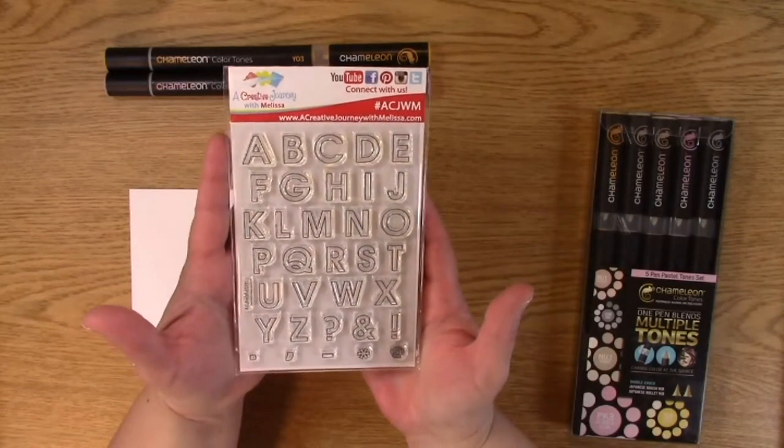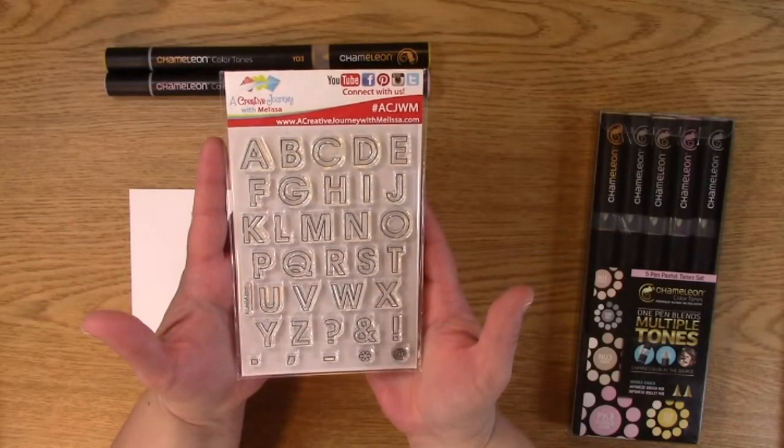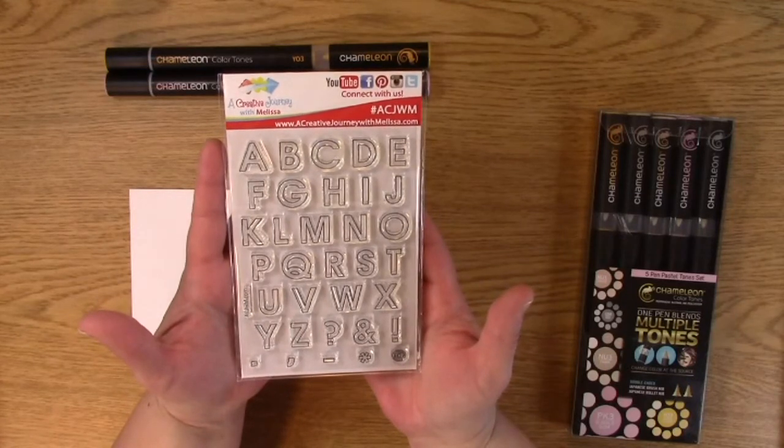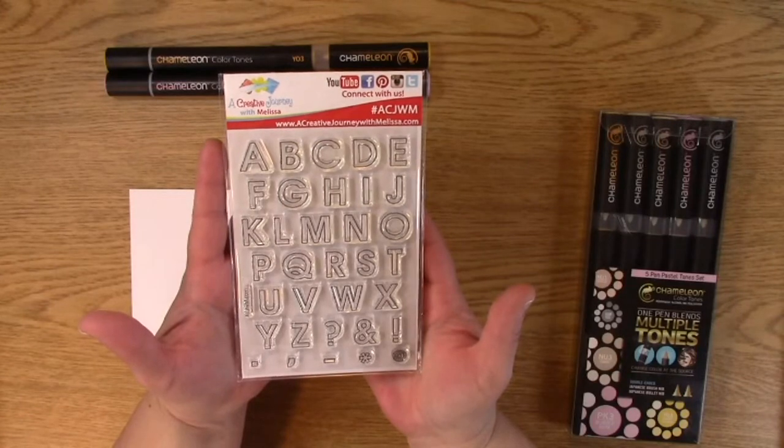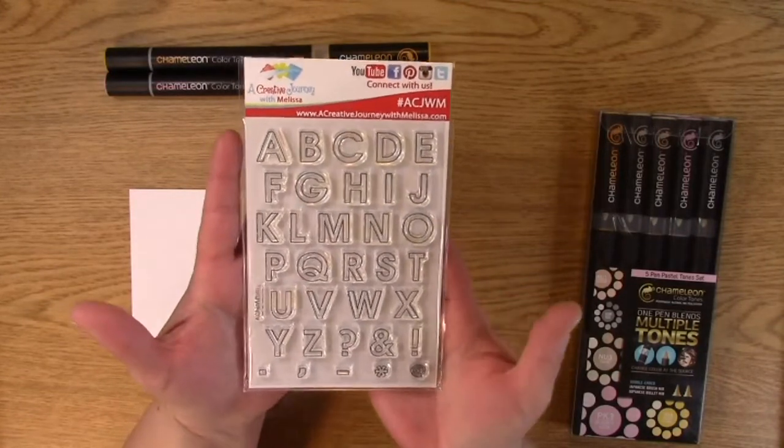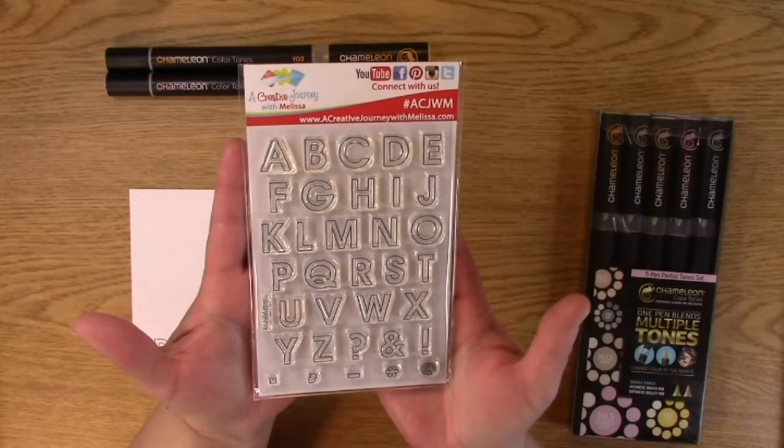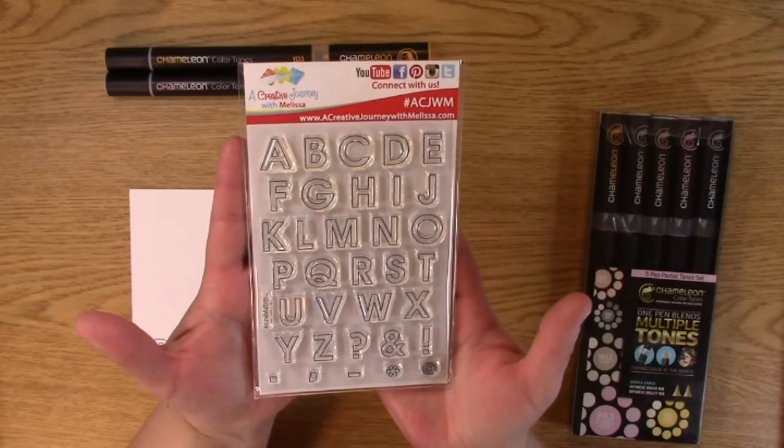What we have here is the Chameleon pen five pen pastel tone set, and that's going to be the giveaway for this week. We have Y03 and PK3. These are the ones that I'm going to be using for this awesome coloring. And then we have our amazing and fantastic Everyday Alphabet Upper and Symbols large stamp set.